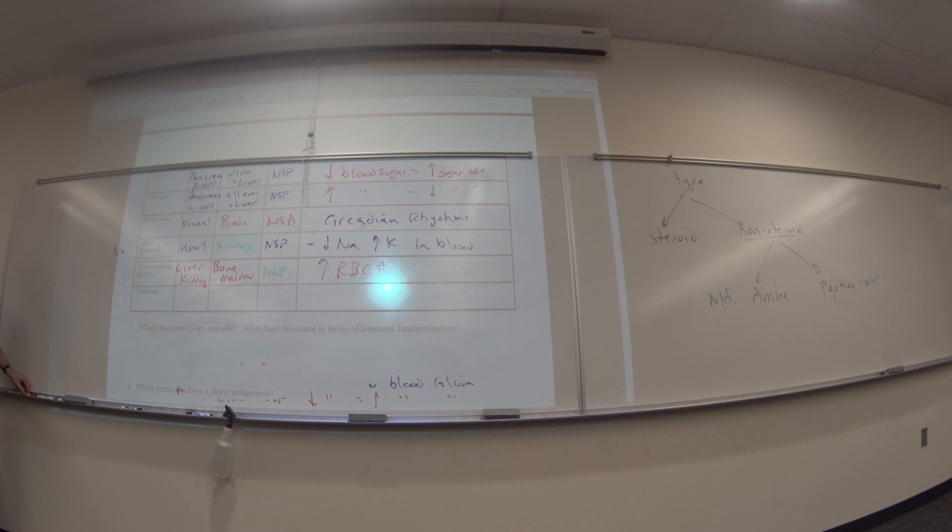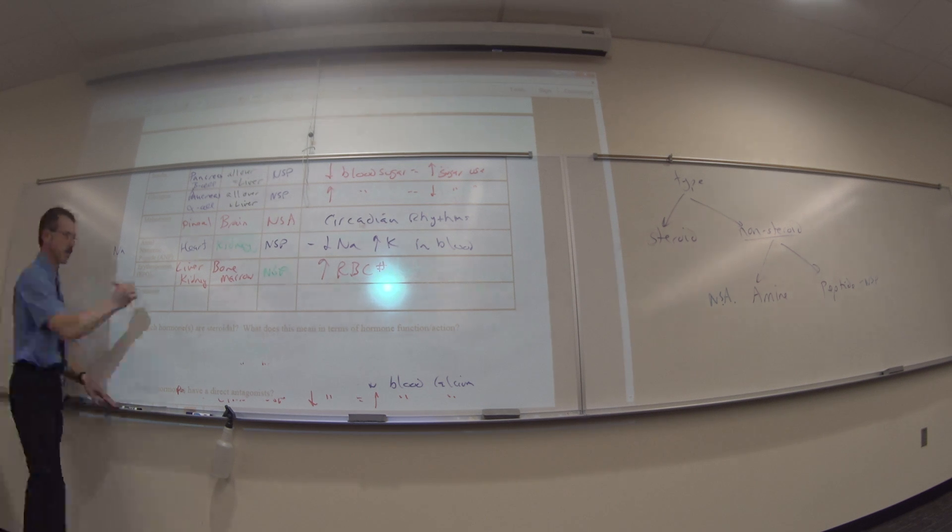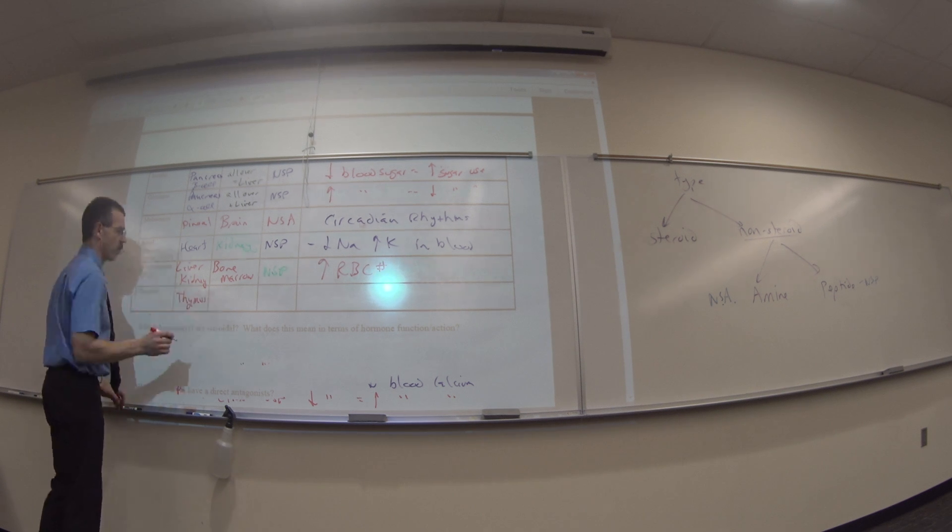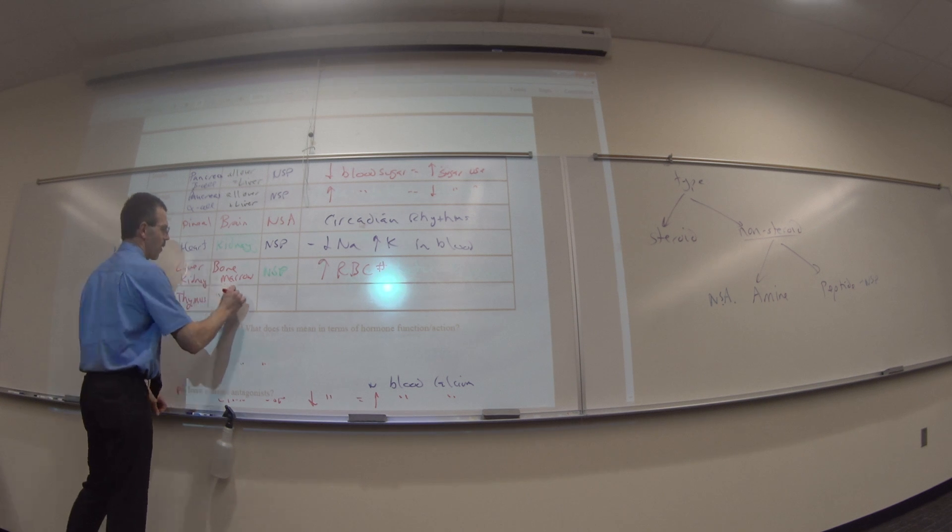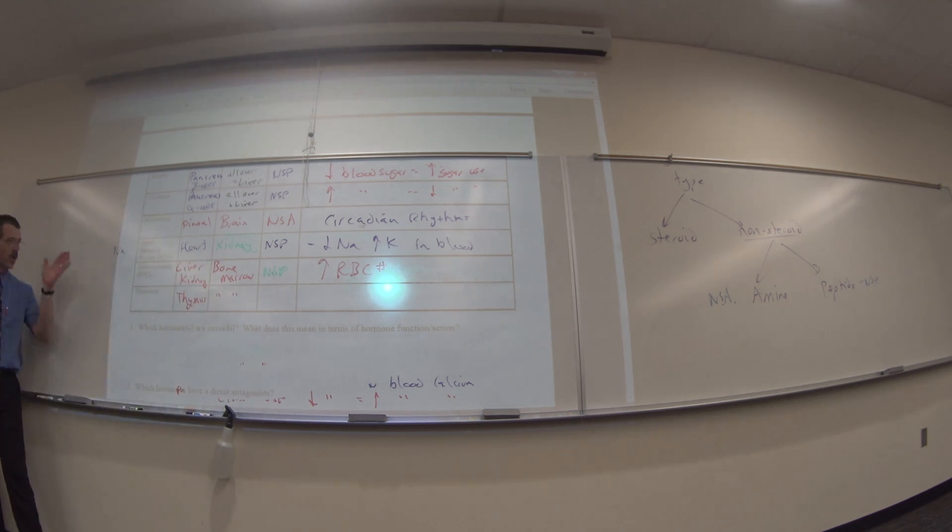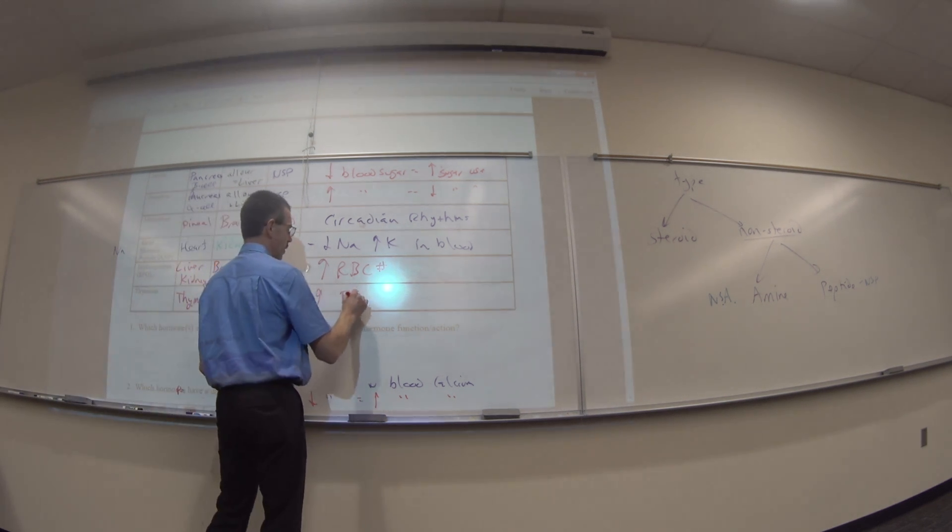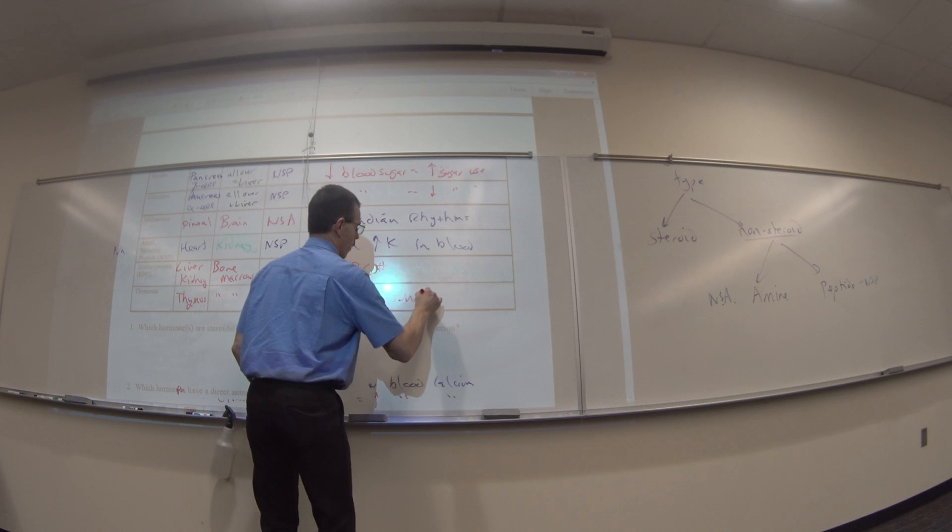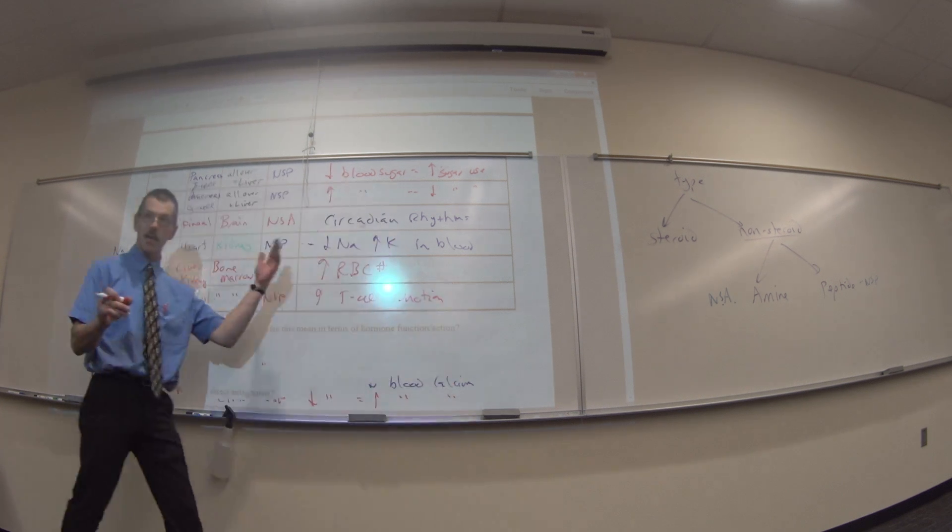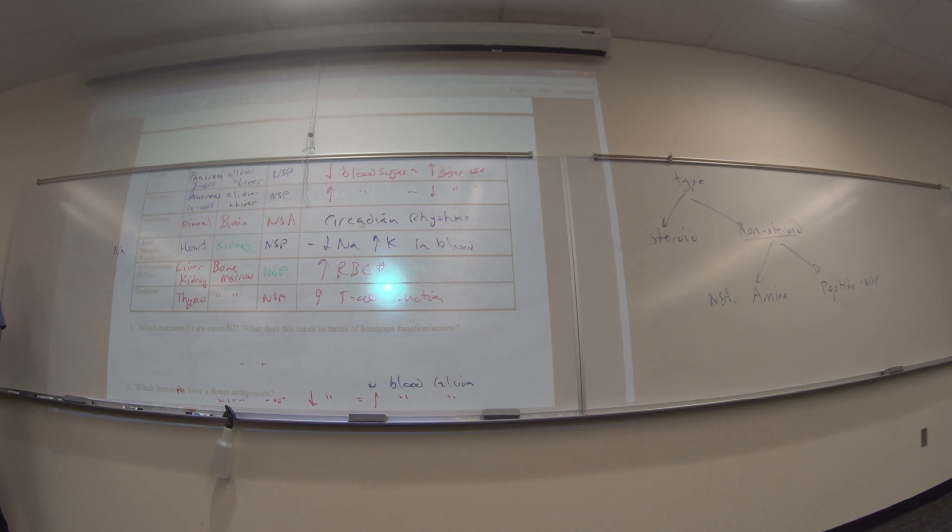Last one, thymosins. Made where? Look at the name. Your thymus. Where does it go? We're going to say bone marrow, but it does go kind of everywhere. Immune function. We'll put bone marrow for now. It's an NSP. It increases T cell function. We'll talk about it in about four weeks. But there's the chart that thou shalt know. So next week, you better be able to quote it back to me.